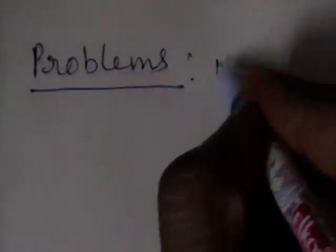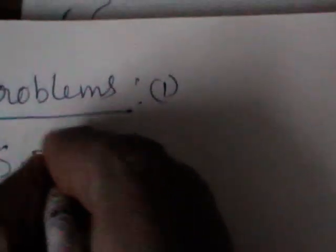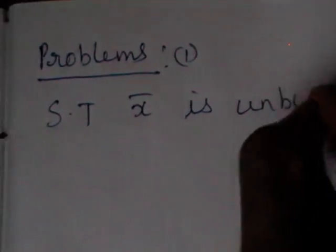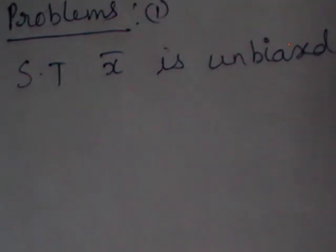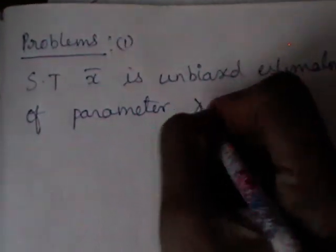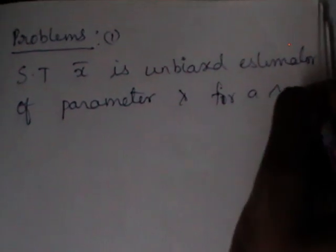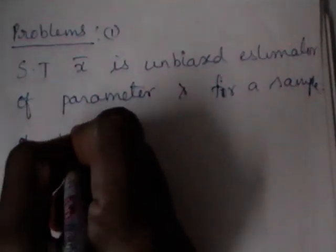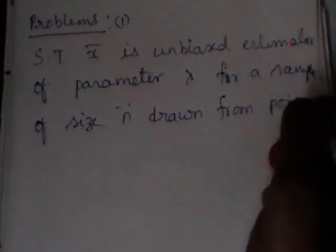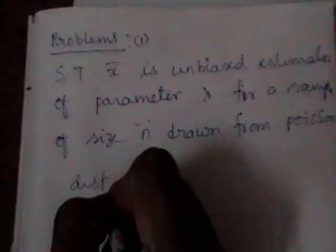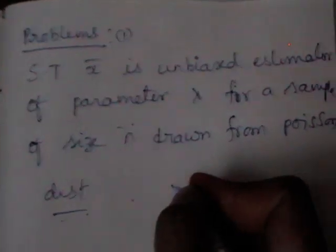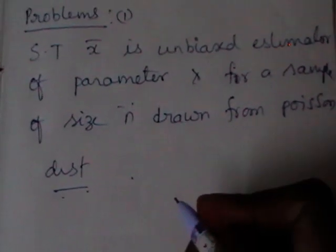We are going to do about seven to eight problems. The first question is: show that X̄ is an unbiased estimator of parameter lambda for a sample of size n drawn from a Poisson distribution.